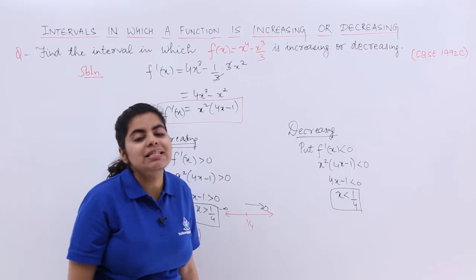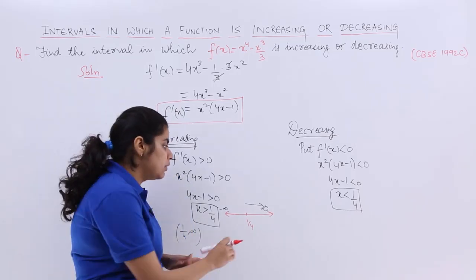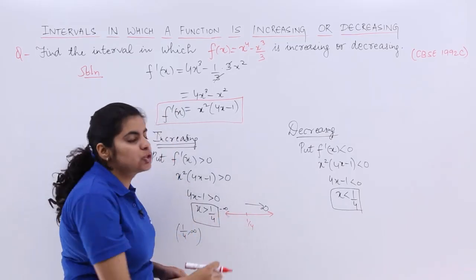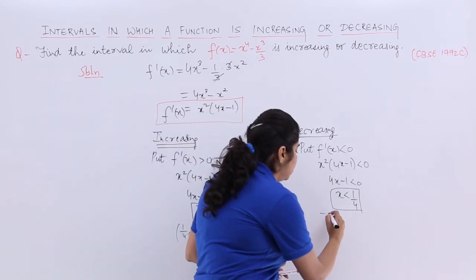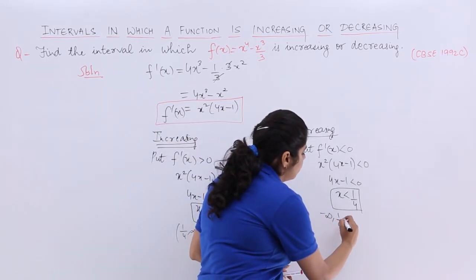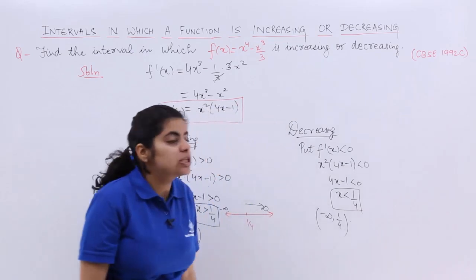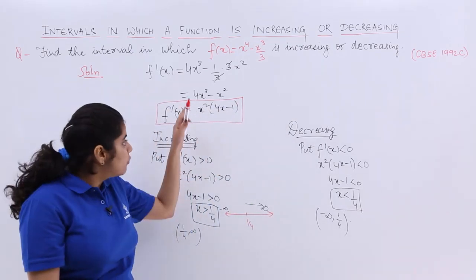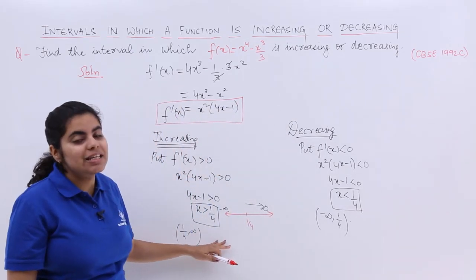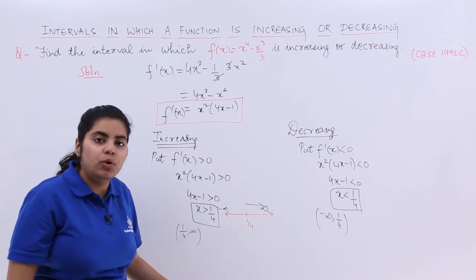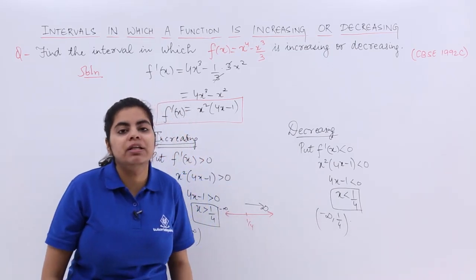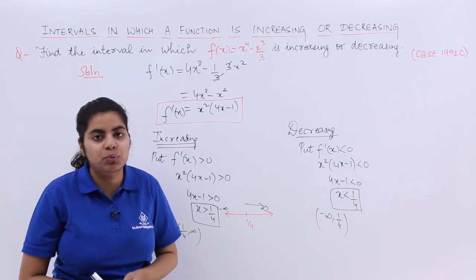Now x < 1/4, that means what? If this is the number line, what is the value lesser than 1/4? It is nothing but the interval (-∞, 1/4). So that means you are asked to find out two intervals. For increasing, the answer is (1/4, ∞), both open. For decreasing, it is (-∞, 1/4), again both open.